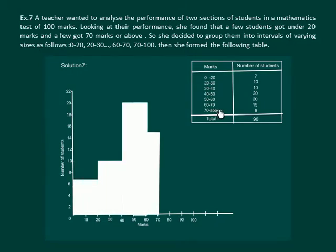Similarly let us draw all the bars. When we reach the last class interval 70 to 100, 8 students have got the marks. The width of the bar is 3 units although the length is 8 units.